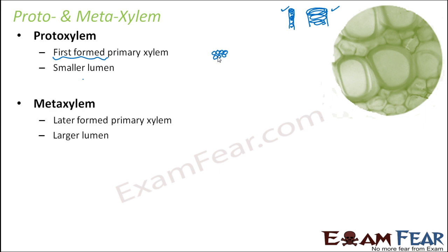The next one is meta xylem — that is the later formed primary xylem. Both proto xylem and meta xylem are primary xylem; within primary xylem there are two stages. The earlier formed is proto xylem and the one formed later is meta xylem. Meta xylem has a larger, wider lumen compared to proto xylem.